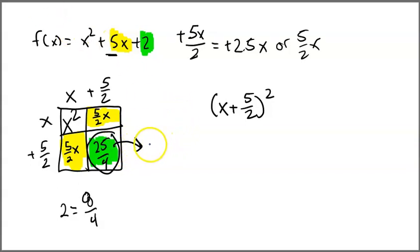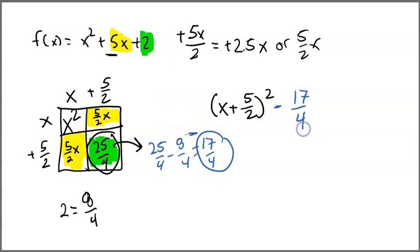How many do I have to take away? I have to take away 25 fourths minus 8 fourths of a tile. So 25 minus 8 is 17 fourths. So I actually have to subtract out of here 17 and a quarter tile so I end up with 2. So that is going to be what I have out back. And so that is my graphing form equation of this parabola.